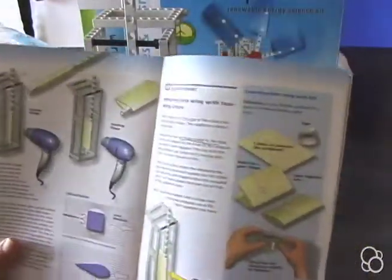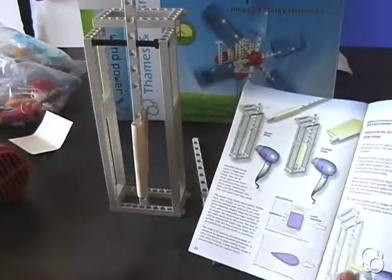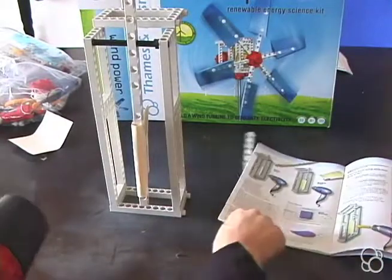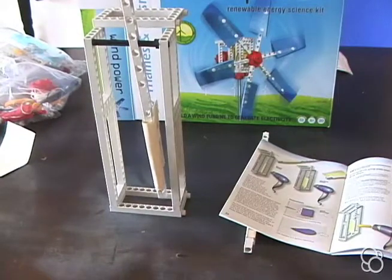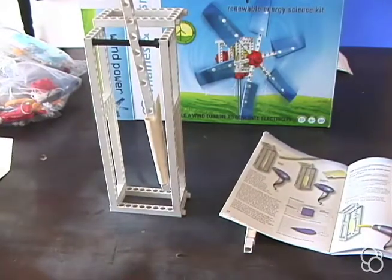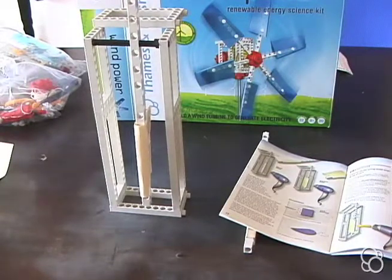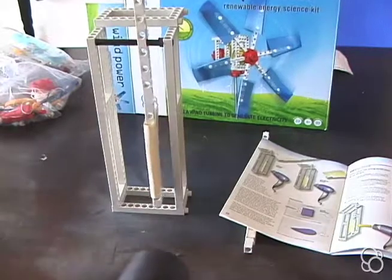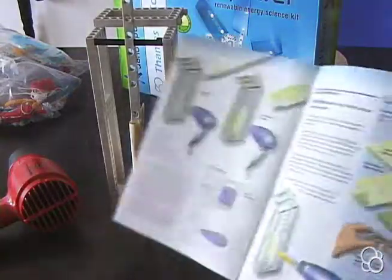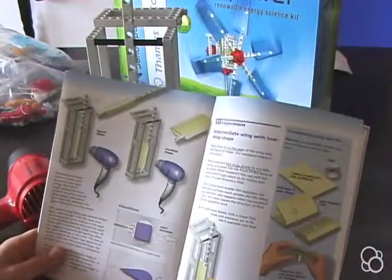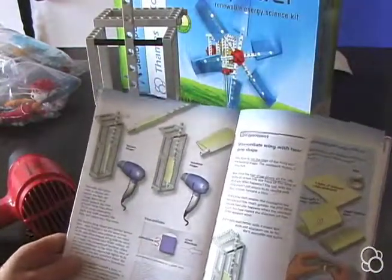So now we're going to move on to intermediate wing with teardrop shape. So first we're going to blow air on the nose of the teardrop wing. And we're also going to look at what happens when we blow the air from the side. Okay so if you noticed the rod with the wing doesn't just return to its resting position, it actually moves forward a little when you blow it from the side.